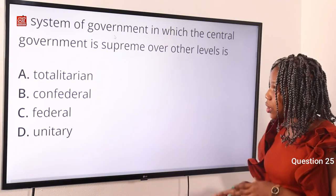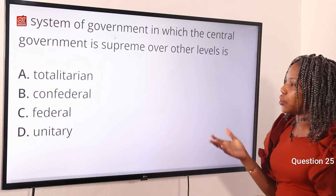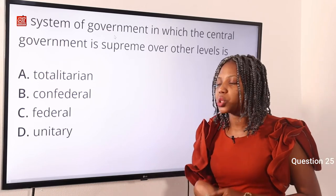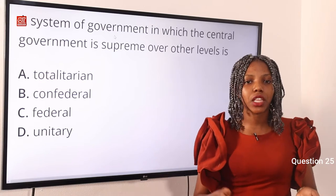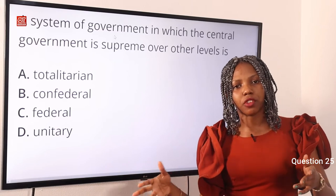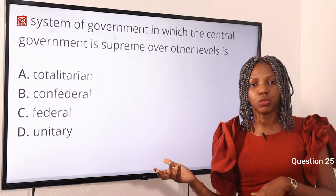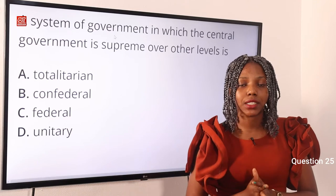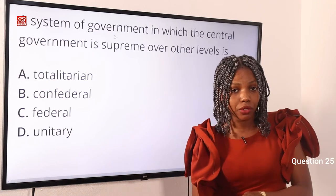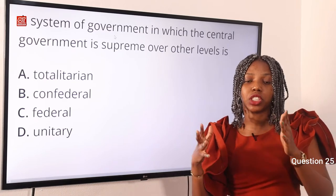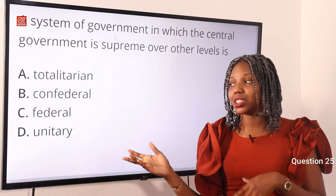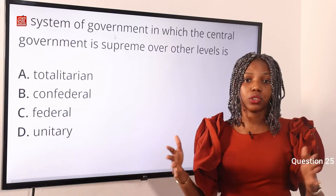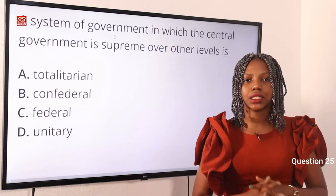Question 25. A system of government in which the central government is supreme over other levels is: Option A, totalitarian. Option B, confederal. Option C, federal. Option D, unitary. The answer is unitary. The unitary system of government is a system in which a single central government has total control over other levels. However, totalitarian is a centralized system characterized by dictatorship requiring complete submission. Confederal means the union of states, and federal means division of political authorities. Option D is correct.